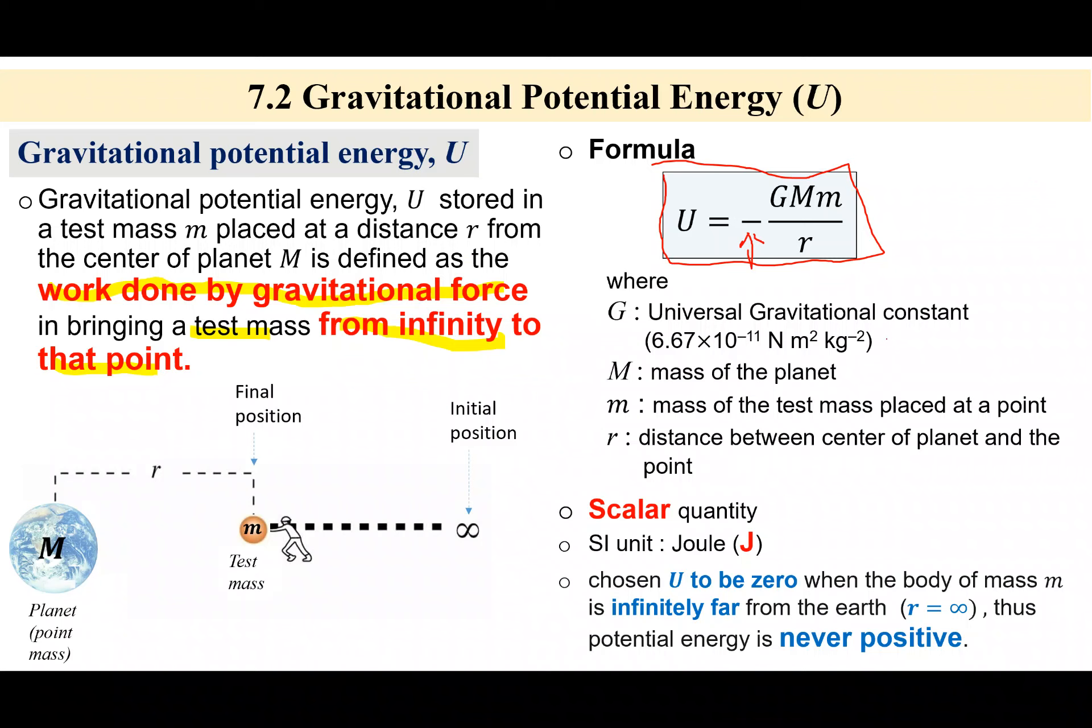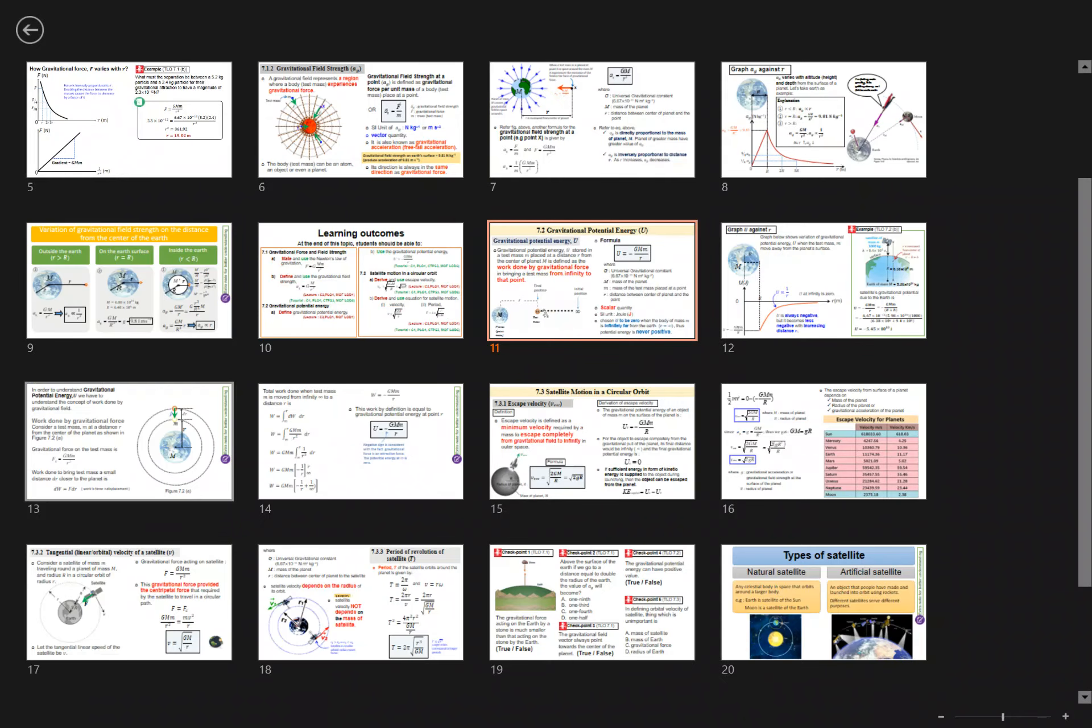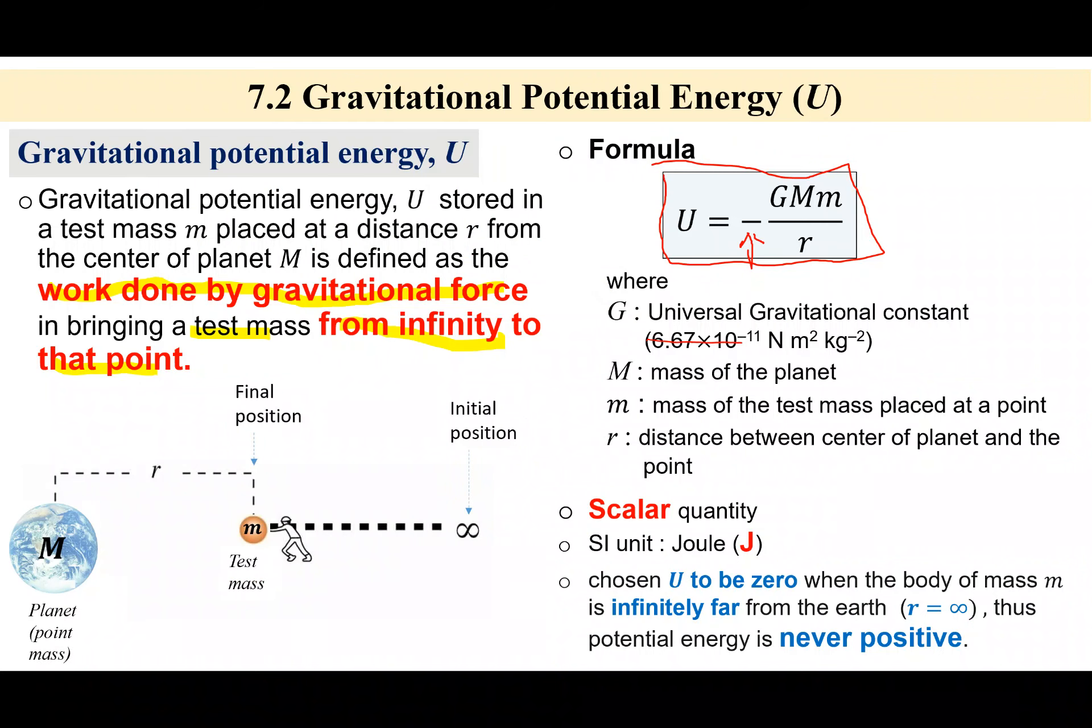So G tu adalah universal constant, which is dia punya nilai adalah 6.67 times 10 power of negative 11. And then capital M is the mass of the planet and small m is the mass of the test mass. So tengoklah test mass tu apa, adakah satellite or whatever lah. R is the distance between center planet to the point, maksudnya center planet to the center of object.